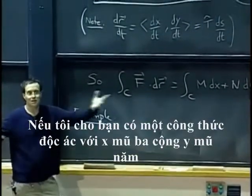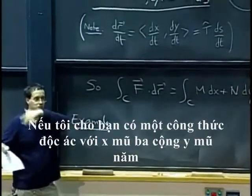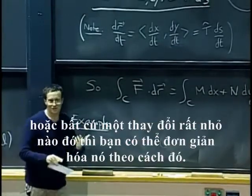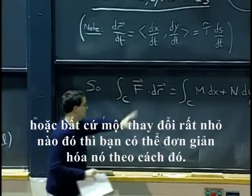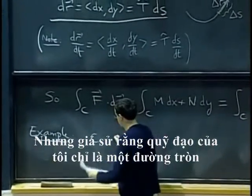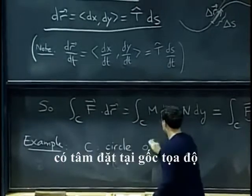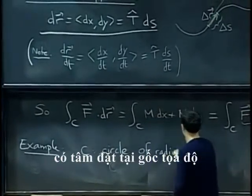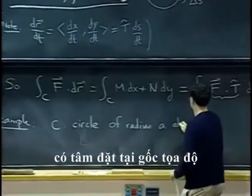If I give you an evil formula with x cubed plus y to the fifth or whatever, there is very little chance that you will be able to simplify it that way. But let's say that my trajectory is just a circle of radius a centered at the origin.